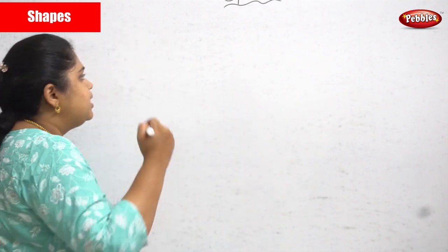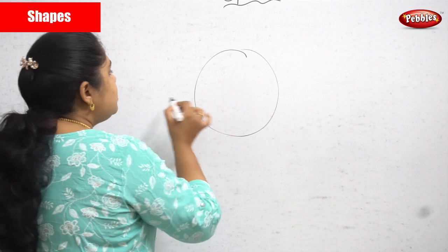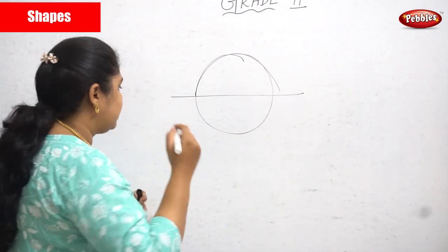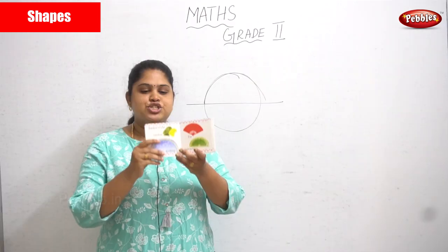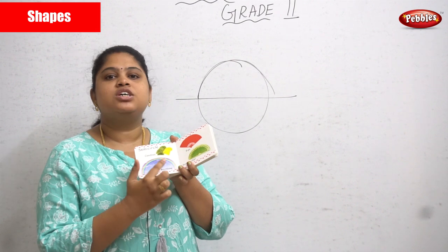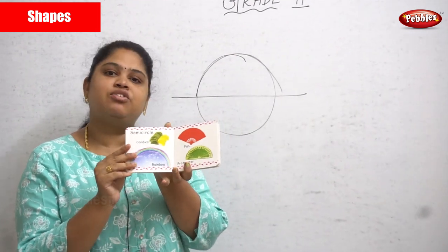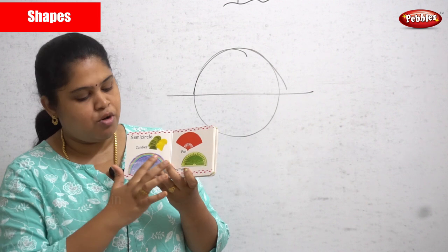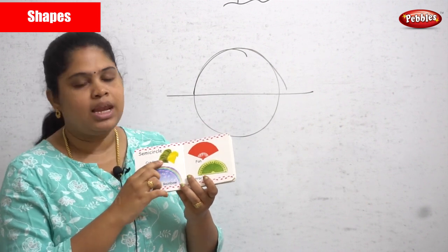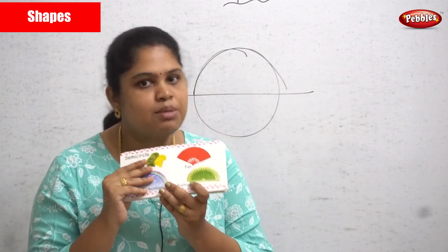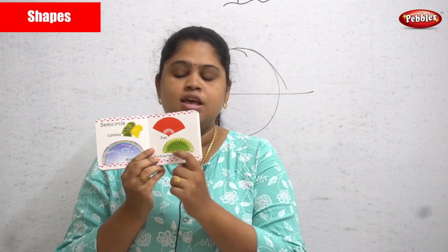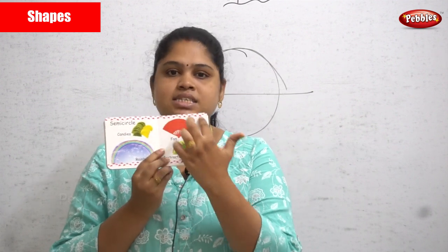Next is the semi-circle. A semi-circle is a half circle. If you write the letter C, it looks like a semi-circle. Examples of a semi-circle: a rainbow has seven colors and is in a semi-circle shape. A lemon cut in half is also a semi-circle. A Chinese fan and a protractor — which you'll learn about in higher classes — also look like a semi-circle.